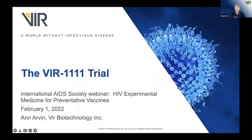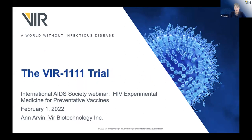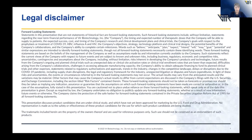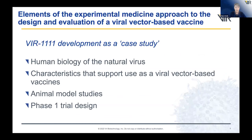Thanks so much, Robin — that was really enlightening on how we might actually speed up the pace of HIV vaccine science. Our next speaker is going to be Professor Ann Arvin, who's going to be talking about the VIR 1111 study. I think you can see my slides. Let me begin by thanking the organizers for the opportunity to present VIR's work in HIV vaccine development, and to the Bill and Melinda Gates Foundation for their partnership. I'll tell you about VIR 1111, which I think is a good case study in experimental medicine — developing a new viral vector for clinical purposes.